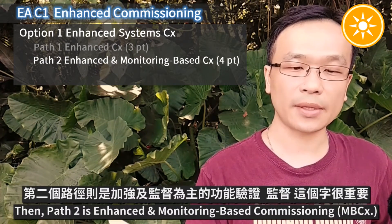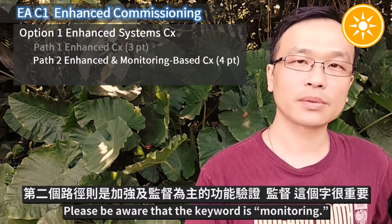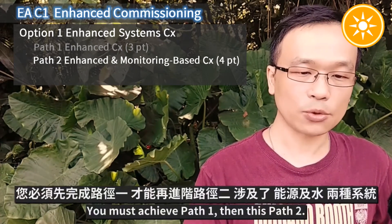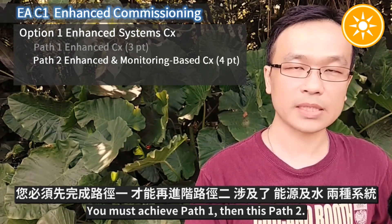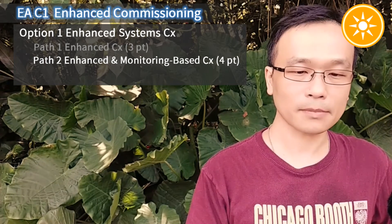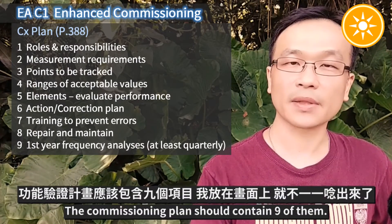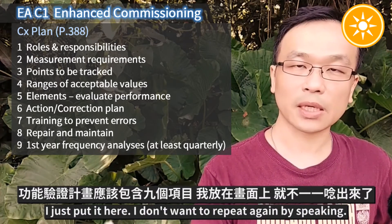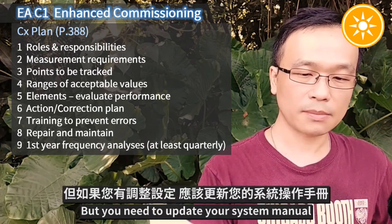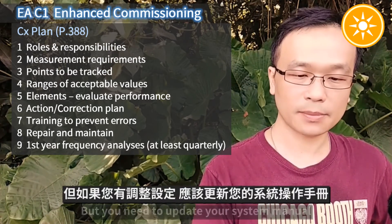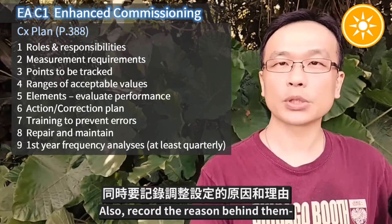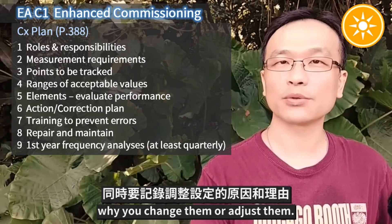Pass two is Enhanced Monitoring-Based Commissioning. Please be aware that the keyword is Monitoring. You must achieve Pass one first, then at least Pass two. It focuses on both energy and water-related systems. The commissioning plan should contain the items shown on screen. You need to update your system manual with modifications or new settings, and also record the reasons behind them — why you changed or adjusted them.